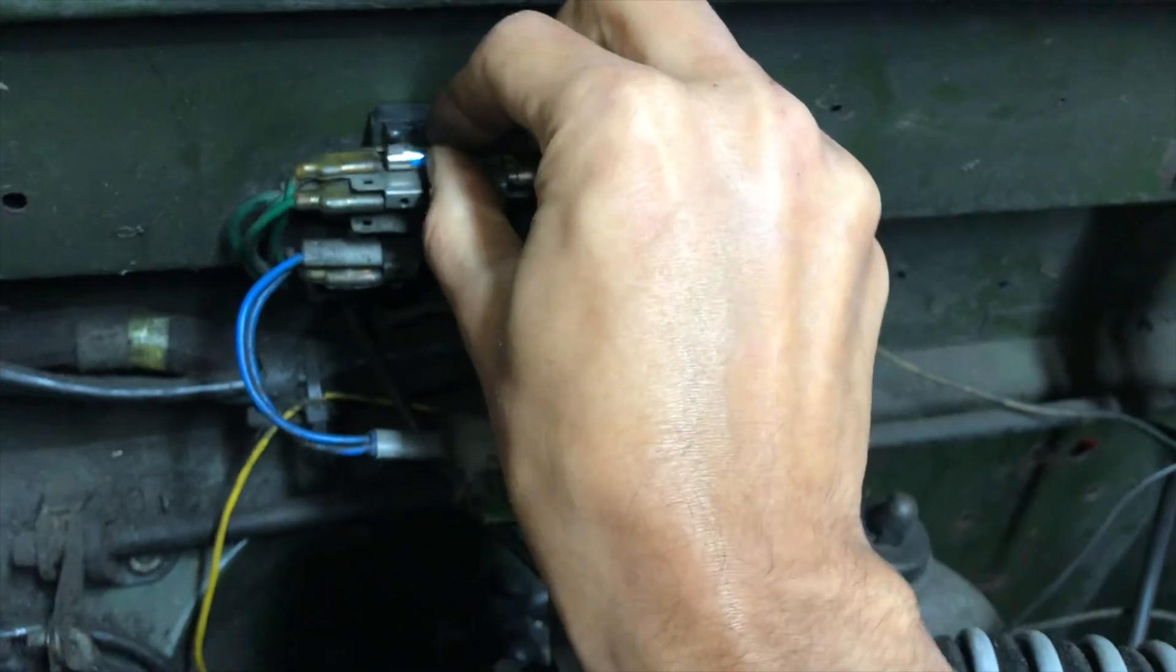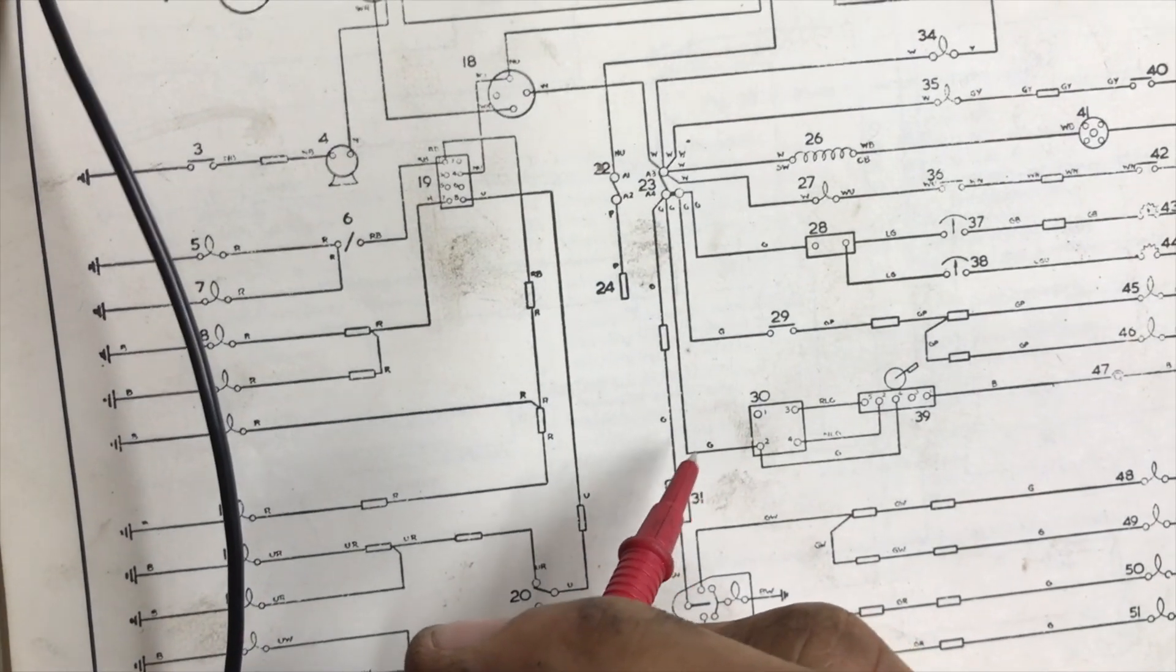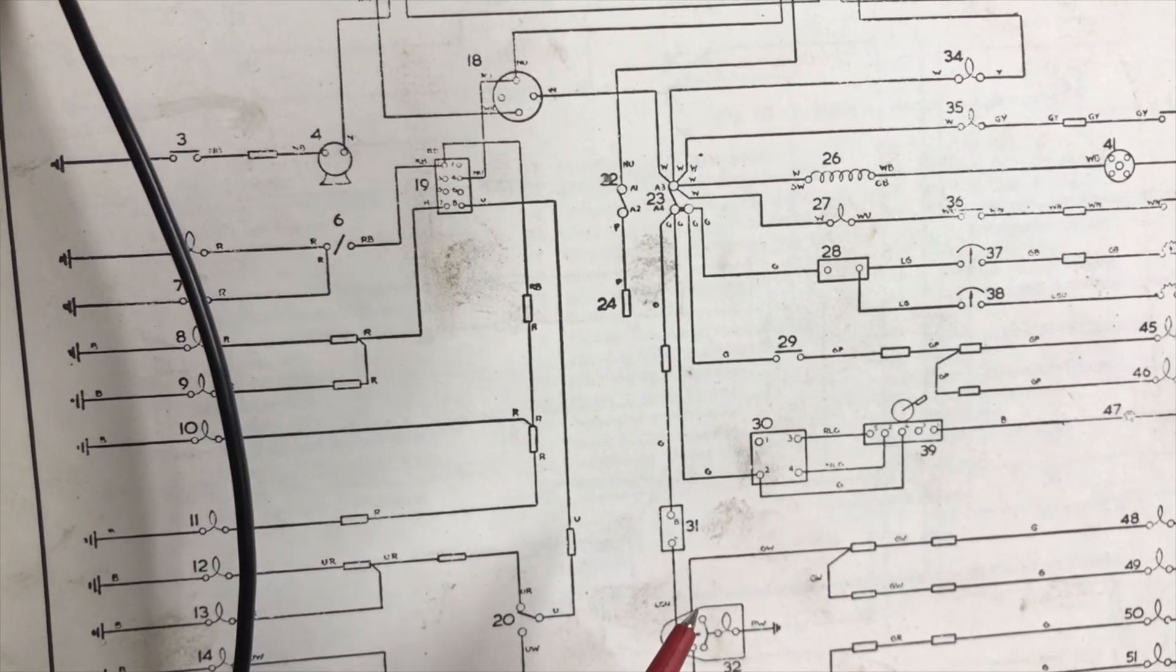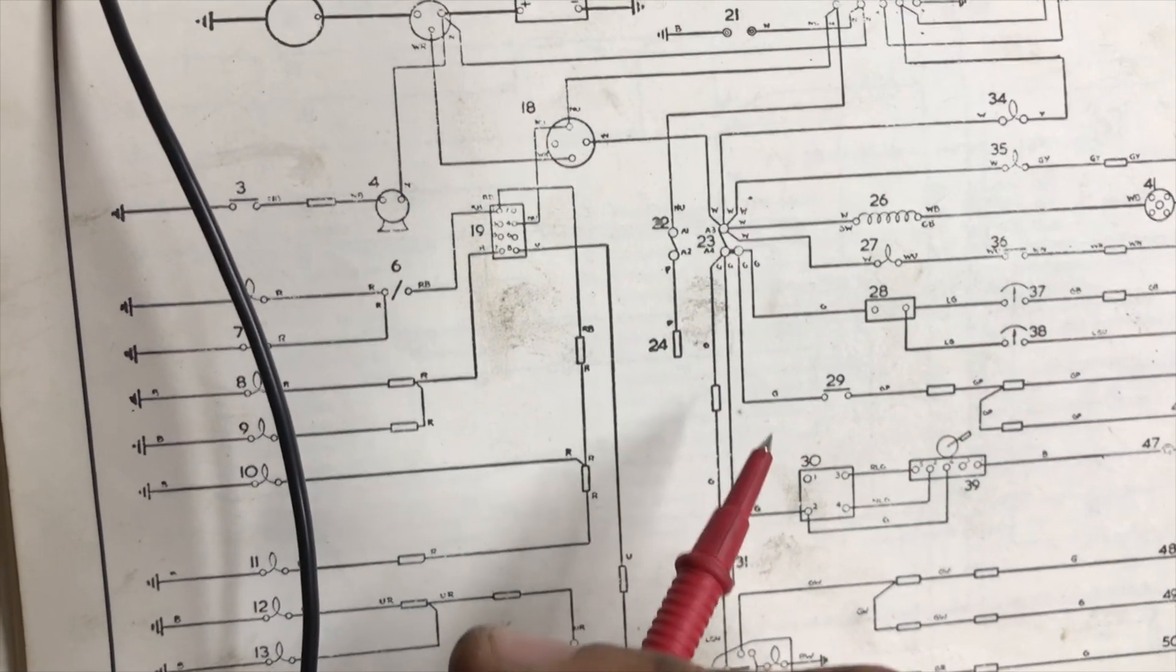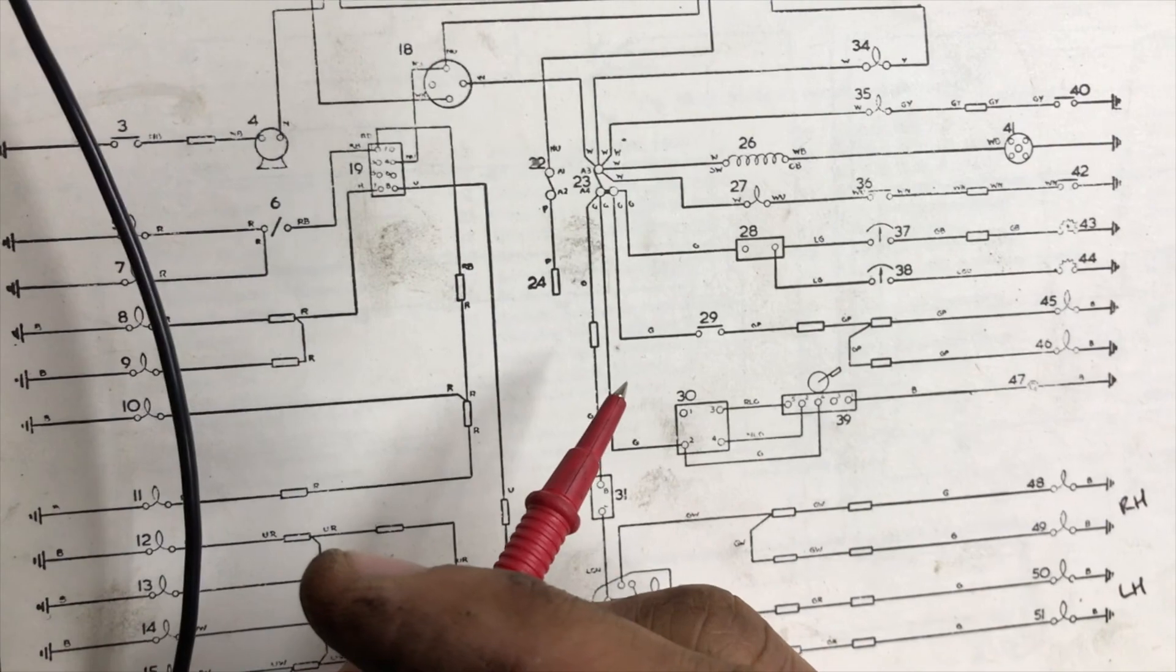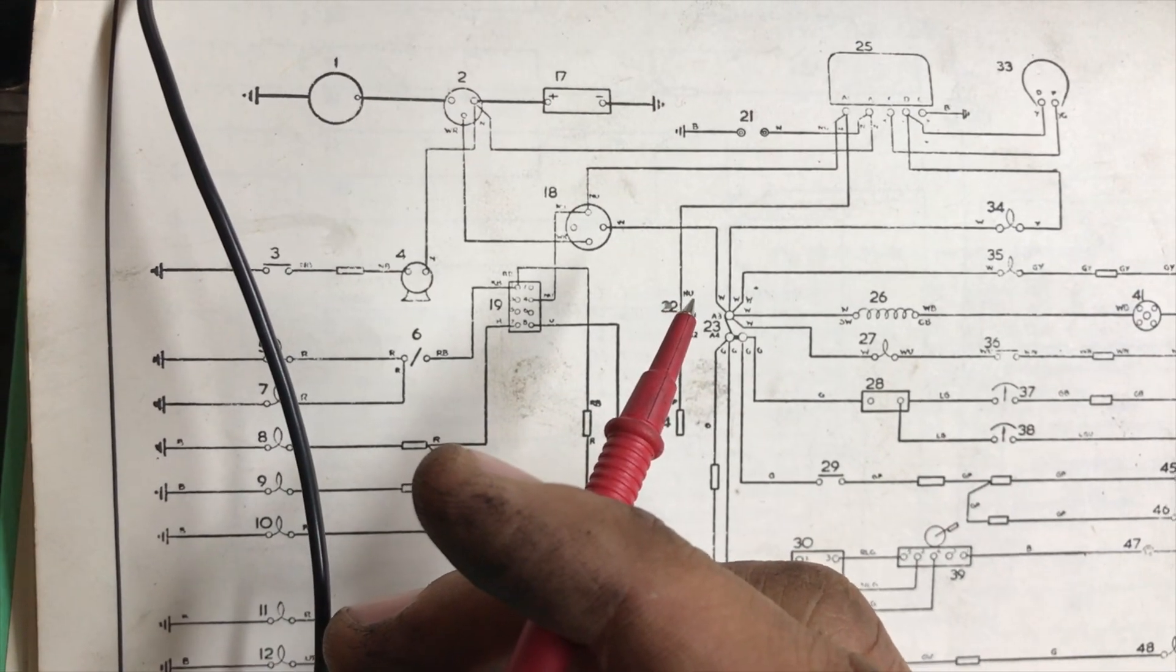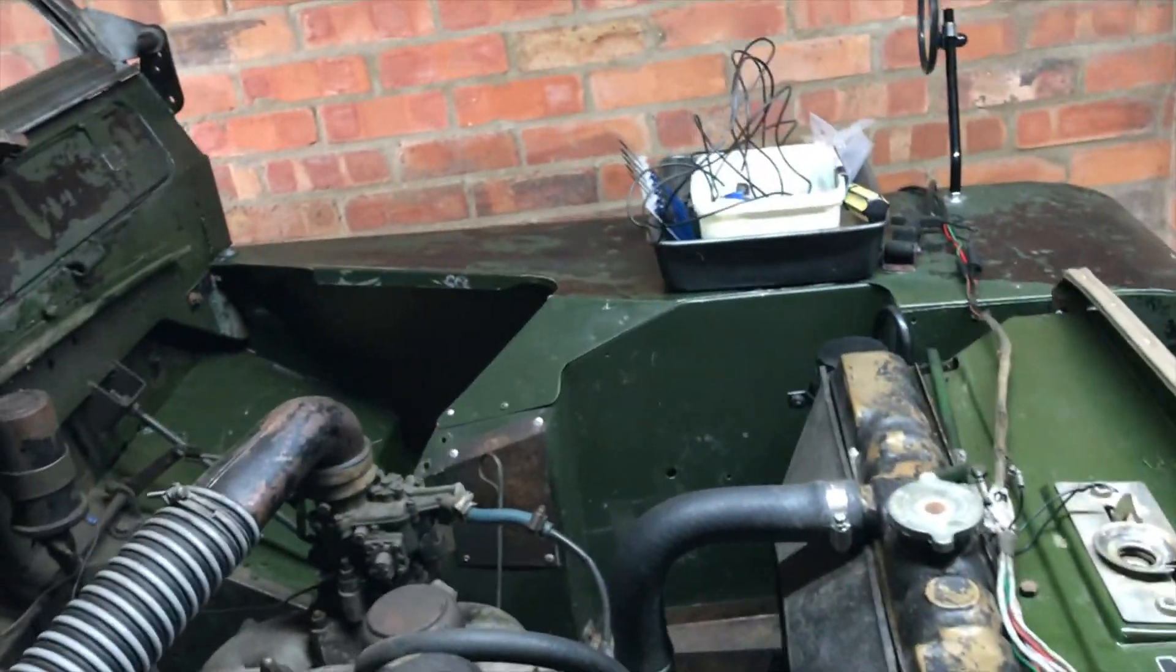So the fuse was fine and so I carried on looking for other problems. I measured the voltage on the green switched ignition wire to my wiper switch. I knew the wipers had been working. That was really low as well. I measured it on the green switched ignition wire to the flasher unit. That was really low. I measured it a couple of other places like the ignition warning light and that was low but not zero. So I knew there was some resistance creeping in somewhere. I'm starting to think I've got to find a burnt wire or a broken wire somewhere.